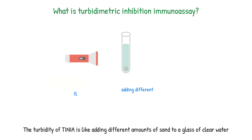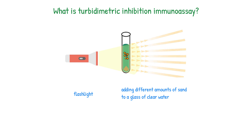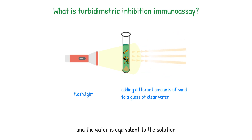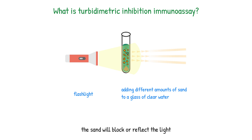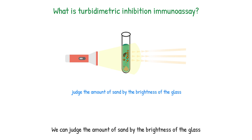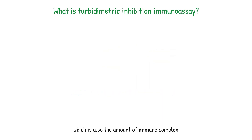The turbidity of TINIA is like adding different amounts of sand to a glass of clear water. The sand is equivalent to the immune complex, and the water is equivalent to the solution. When we shine a flashlight on the glass, the sand will block or reflect the light, making the glass look darker or brighter. We can judge the amount of sand — and thus the amount of immune complex — by the brightness of the glass.